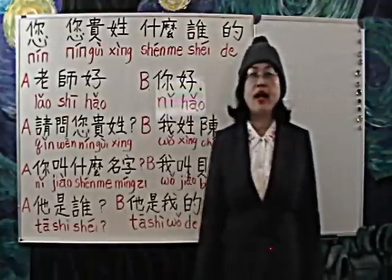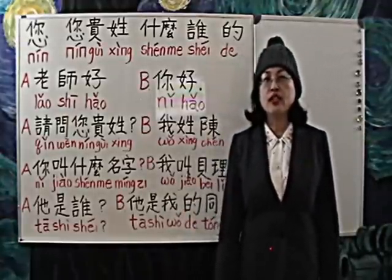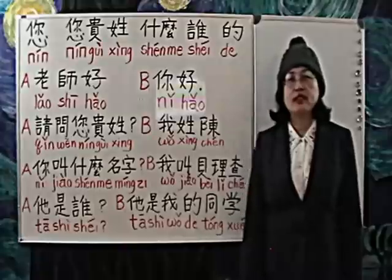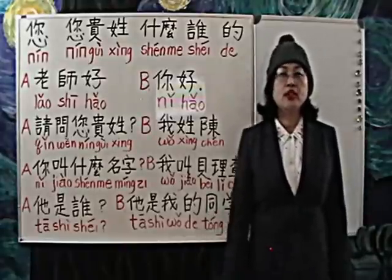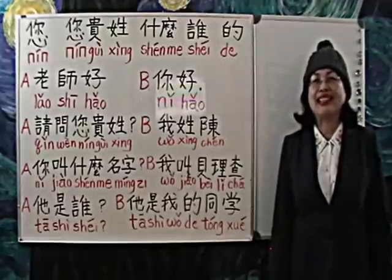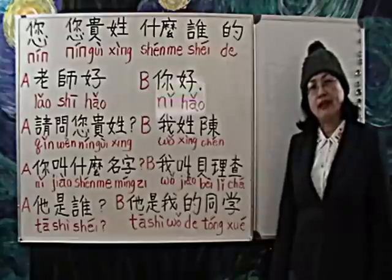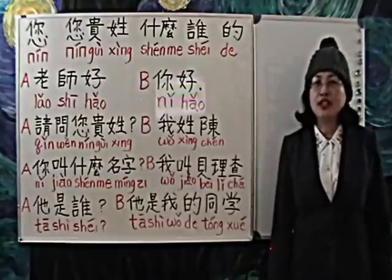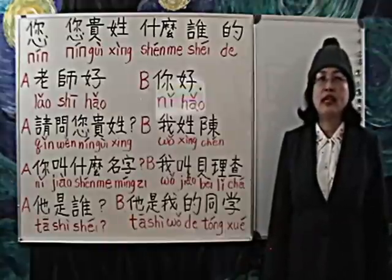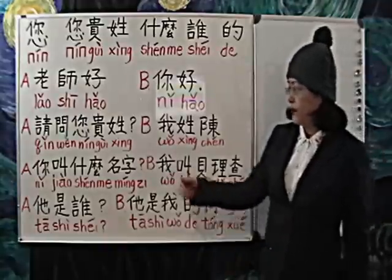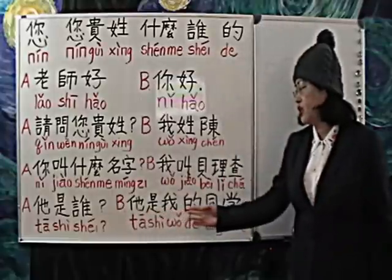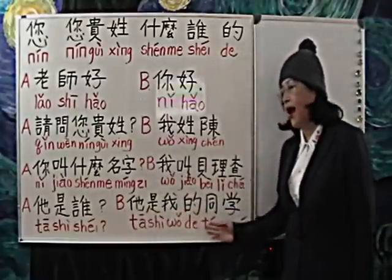的 — the particle 的 is used between a modifier and a noun. A noun with 的 is similar to the apostrophe-S construction in English — my, your, his, her. So, 他是谁? — Who is he? 他是我的同学 — He is my classmate.